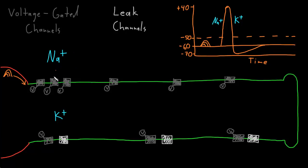This movement of sodium and potassium ions across the membrane, causing the waveform of the action potential, starts at the trigger zone at the axon initial segment, but then rapidly spreads in waves down the axon. First, there's a wave of depolarization from the opening of the voltage-gated sodium channels spreading rapidly down the axon. Following right behind it is a wave of hyperpolarization caused by potassium exiting through the voltage-gated potassium channels and the leak channels.